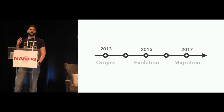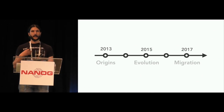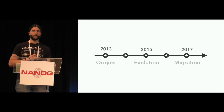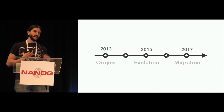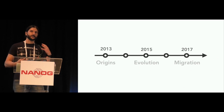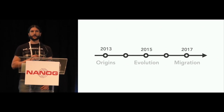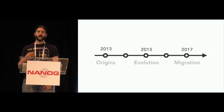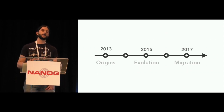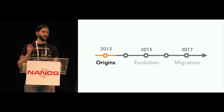This talk is going to have three main parts. I'm going to jump back to 2013 and explain why and how we built our own control plane. Then I'm going to jump to 2015 and detail how we rethought our original control plane and started iterating on it. And finally, we'll go to early 2017, when we had finished designing our new control plane and started working on a migration plan to go from the old to the new.